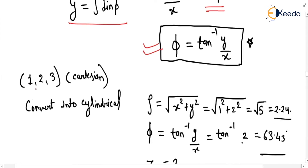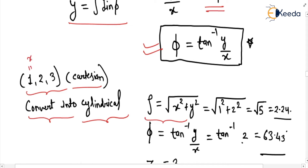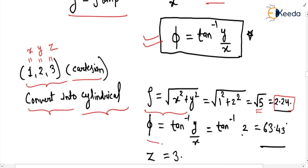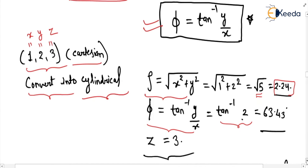Let us take the point (1, 2, 3) in the Cartesian coordinate system and convert it to the cylindrical coordinate system. Rho is the square root of x squared plus y squared, so with x equal to 1, y equal to 2, and z equal to 3, rho equals the square root of 1 squared plus 2 squared, which is the square root of 5, equal to 2.24. Phi equals tan inverse of 2 over 1, which gives 63.43 degrees, and z equals 3.